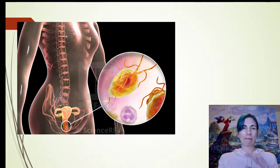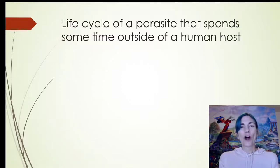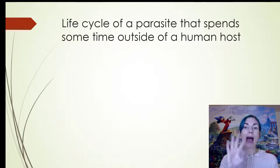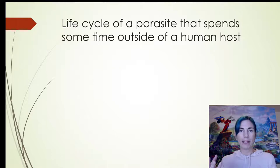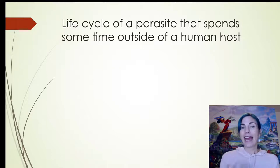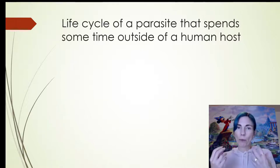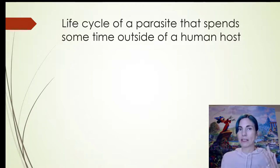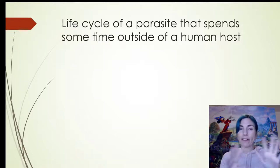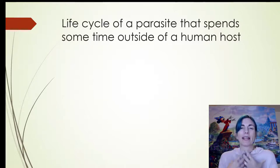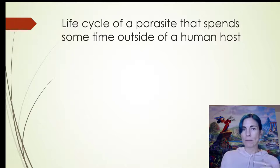Anytime you have a parasite that needs to spend time outside of the human — because it needs to get into a new human and sexual transmission isn't an option, say if it infects the GI tract with a portal of exit through feces — it needs to survive in wastewater, soil, cold, dry conditions. If it has a form adapted to the human body, it probably needs a hardier form to survive outside. This is what we see with our next example, Giardia.